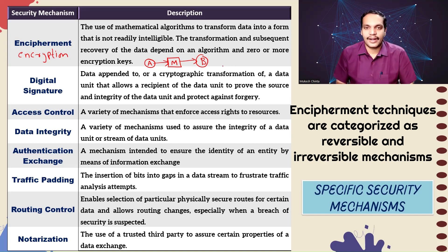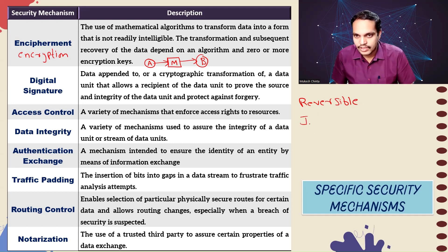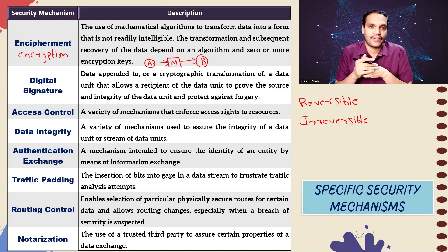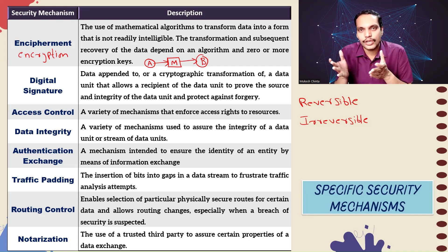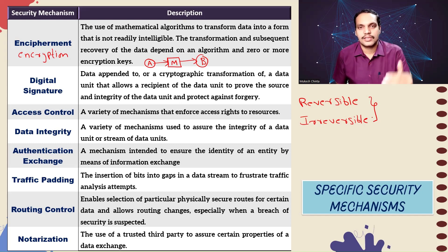X.800 divides encipherment schemes into two categories: reversible encipherment and irreversible encipherment. Reversible encipherment means encrypting the data at the sender and then subsequently decrypting the data to recover the original data sent by the sender. Irreversible encipherment covers hash algorithms and message authentication codes — it is only a one-way function, mainly used to verify the authenticity of the sender and ensure integrity. These are the two types of encipherment schemes, providing services like confidentiality, integrity, and authentication.